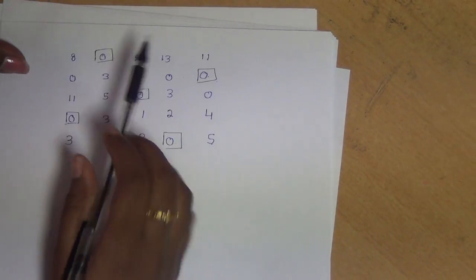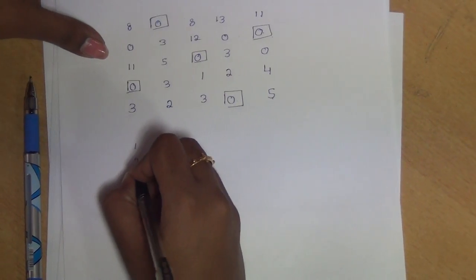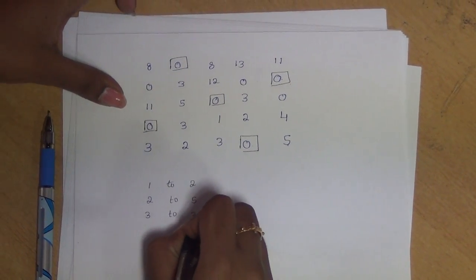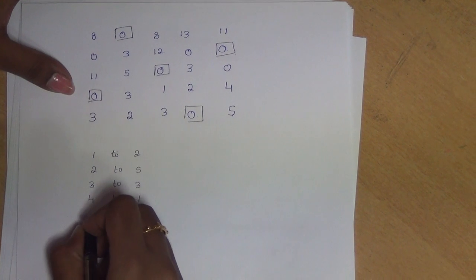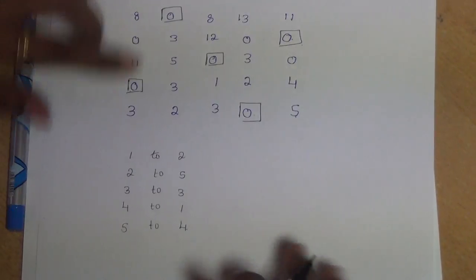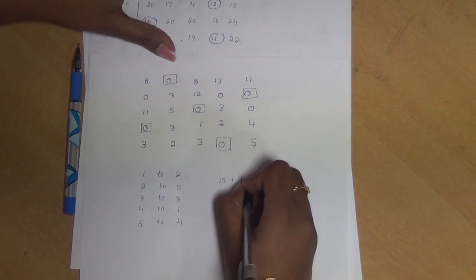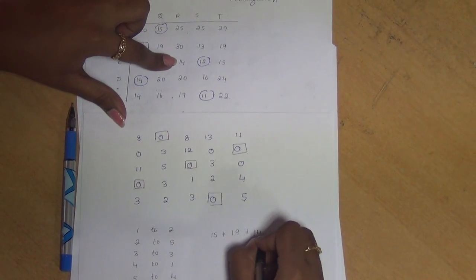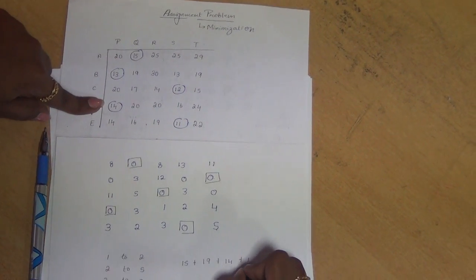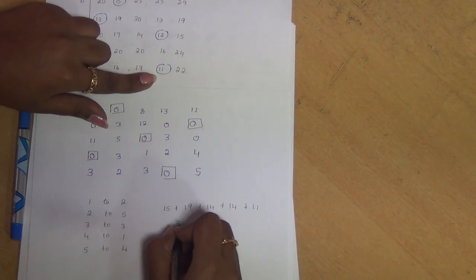Now I can assign each mechanic to each mission. The first mechanic is assigned to the second mission, the second mechanic is assigned to the fifth mission, the third mechanic is assigned to the third mission, and the fourth mechanic is assigned to the fourth mission. The total value obtained from the original tabular column will be: first mechanic to second mission is 15, second mechanic to fifth mission is 19, third mechanic to third mission is 14, fourth mechanic to first mission is 14, and fifth mechanic to fourth mission is 11. Summing up all these values, we get a total of 73. This will be the final result. Thank you.